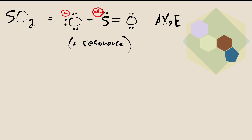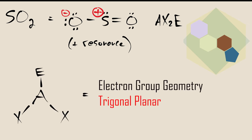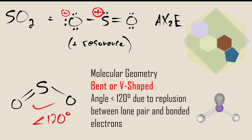Shown here is sulfur dioxide. From the Lewis structure, we can see that the central atom is surrounded by three electron groups: two atoms and one lone pair of electrons. Therefore, we can assign the AX2E designation. The three electron groups will arrange themselves in a trigonal planar geometry around the central atom. However, molecular shape is determined only by the bonded atoms. As shown here, the molecular geometry for sulfur dioxide is bent or V-shaped.